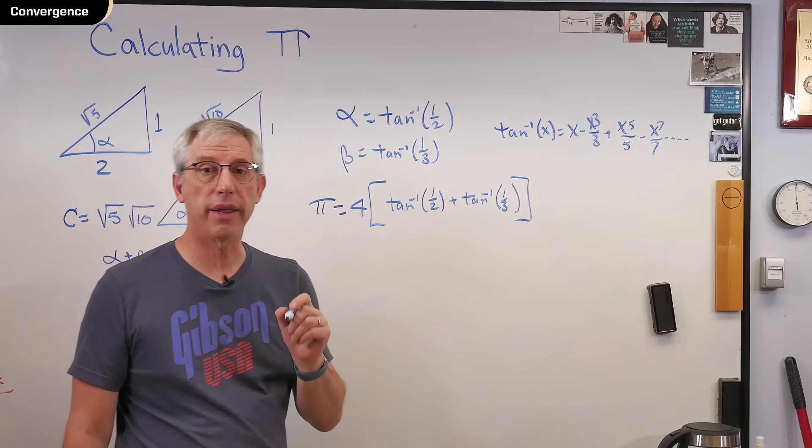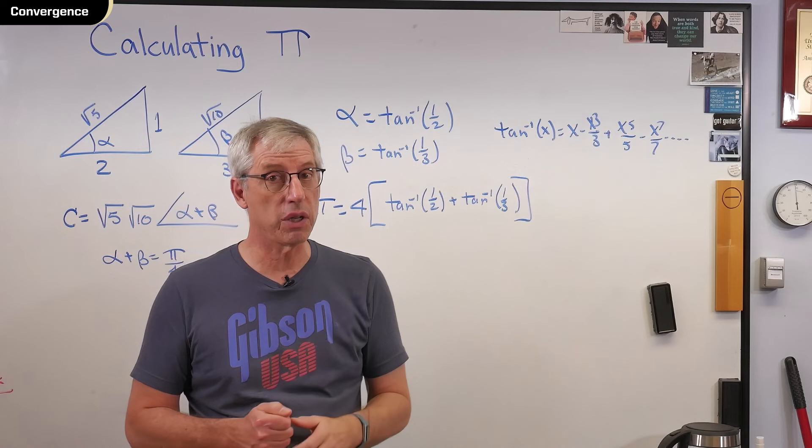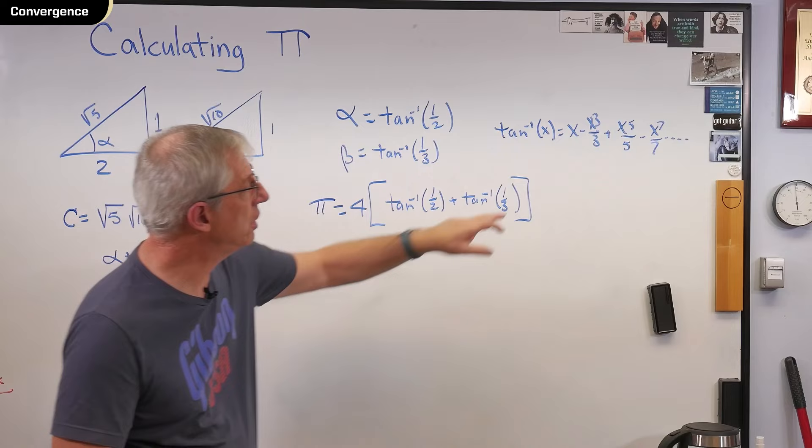It's going to give you the right answer. It's going to boil down to addition, subtraction, multiplication, and division, because that's all you get to do with a digital computer. And it's going to converge quickly, because these terms are going to get small pretty fast.